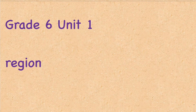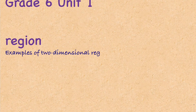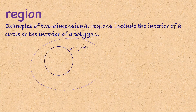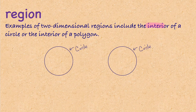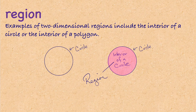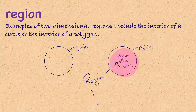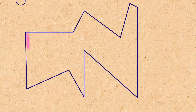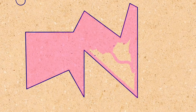Hey, what's up everyone — we're going to do Grade 6 Unit 1 today. The first word we're going to do is 'region.' Examples of two-dimensional regions include the interior of a circle or the interior of a polygon. Here we've got a couple of circles, and the interior of that circle is the inside shaded in pink. The line itself is just the boundary; the region is that space inside.